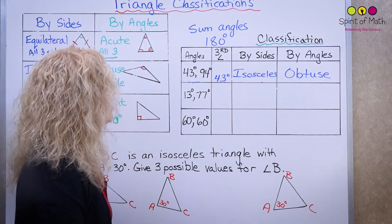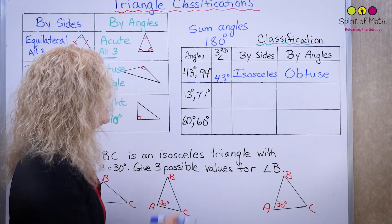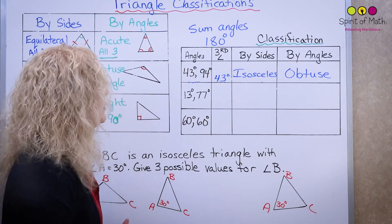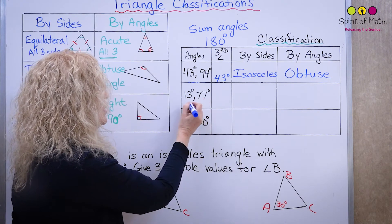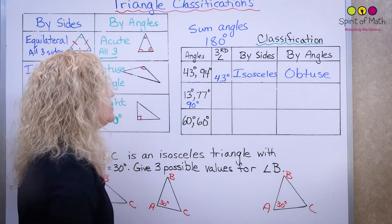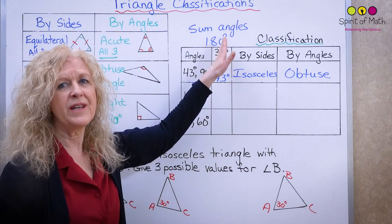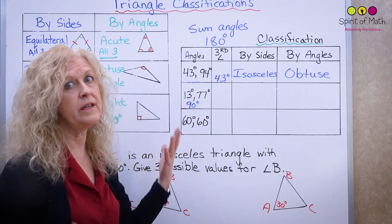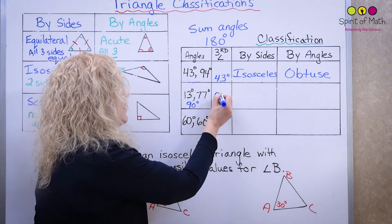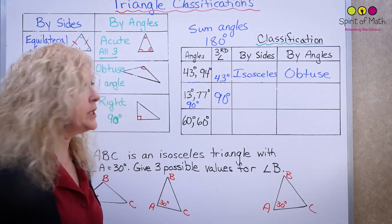All right, let's go to the next one. This triangle has angles of 13 and 77 degrees. If you add those two together, you get 90 degrees. So 90 plus what equals 180? The third angle must be 90 degrees.